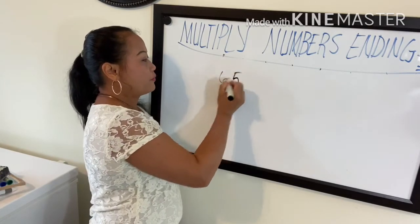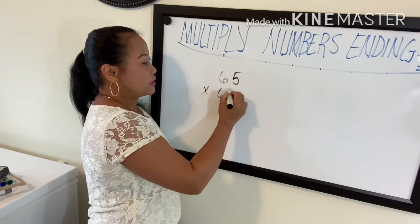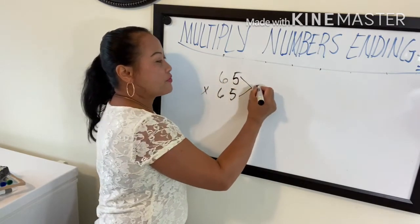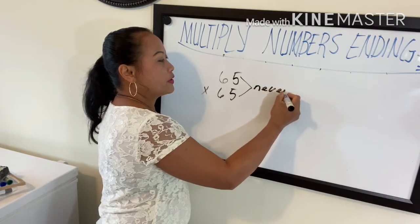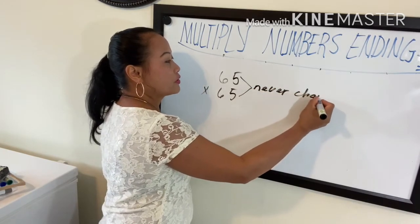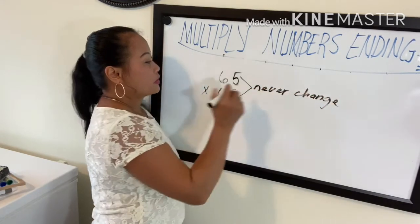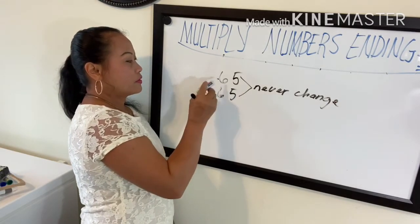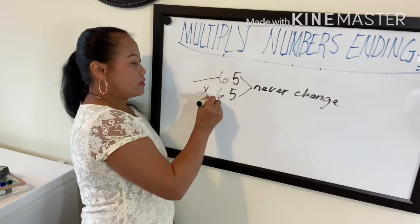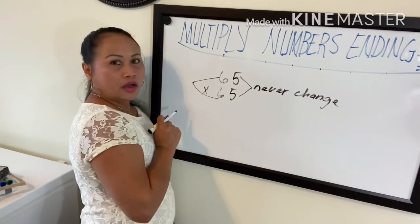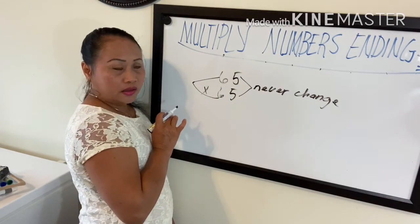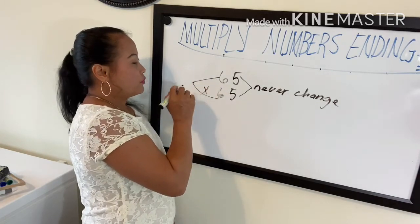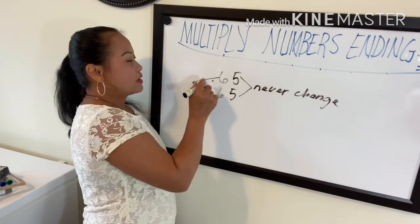Sixty-five times sixty-five. The five never changes — this last number is always constant. The first two digits can change, but they must always be the same as each other.